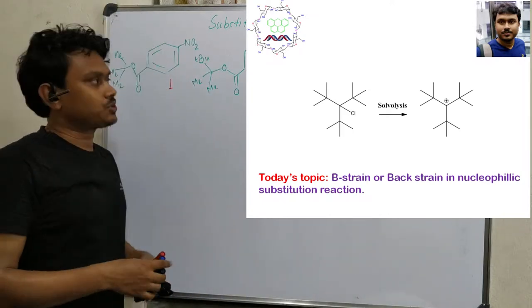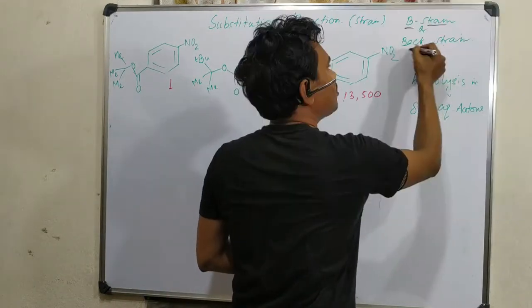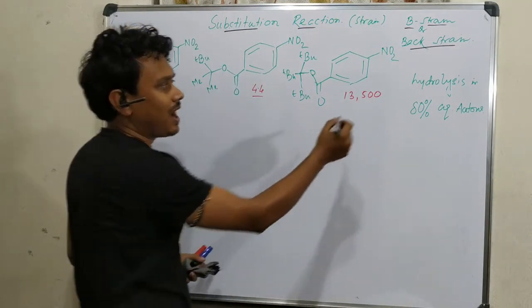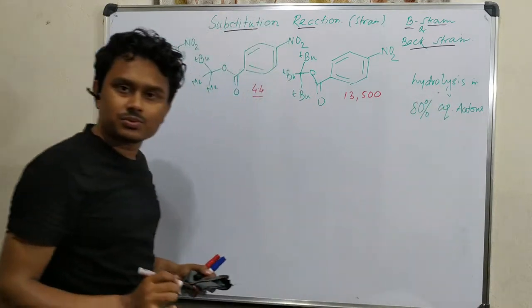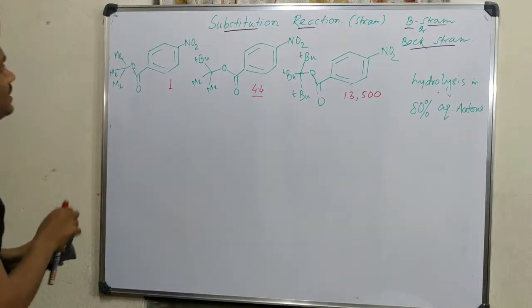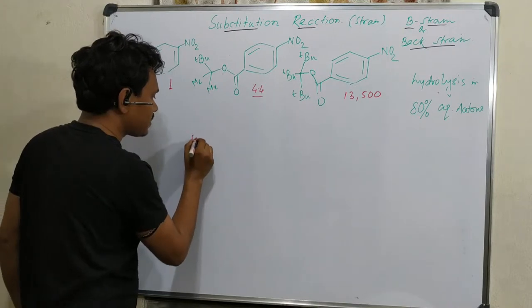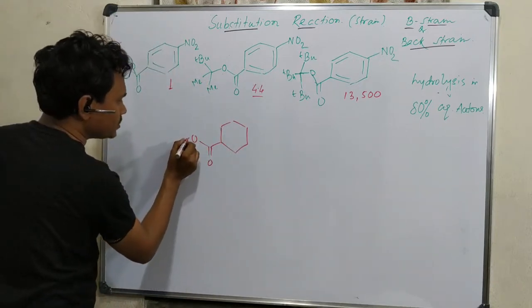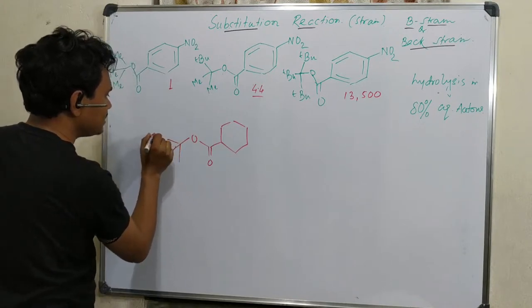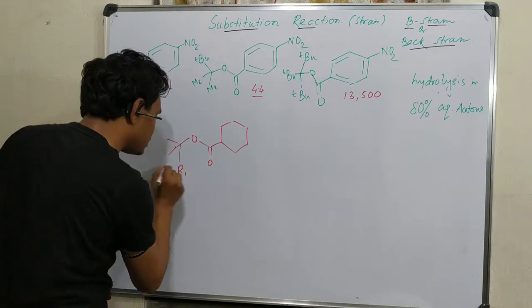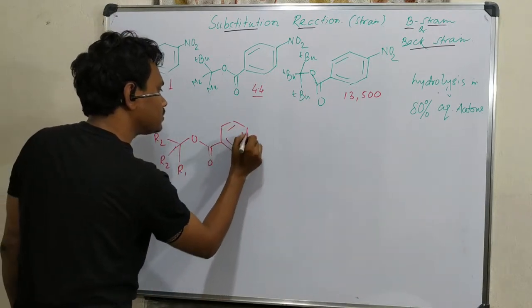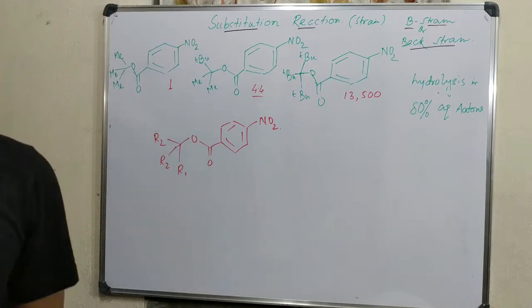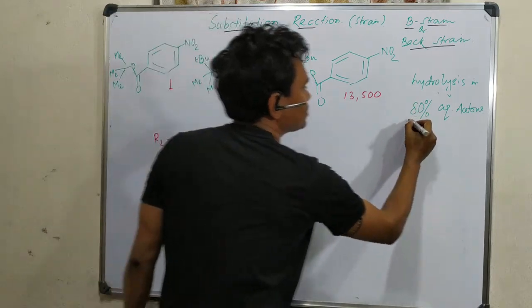Today we will discuss back strain or B strain. This back strain is utilized in substitution reaction. For that purpose we have chosen a hydrolysis reaction in 80% aqueous acetone. From this you can clearly see that the reaction is paranitrobenzoate hydrolysis, and the substitution center is this one. So substitution is changed at this center and ultimately hydrolysis occurs in presence of 80% aqueous acetone.